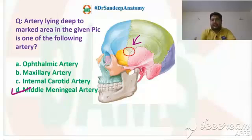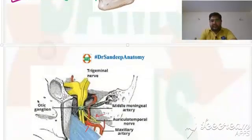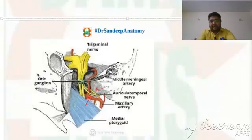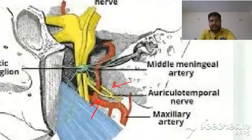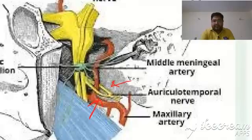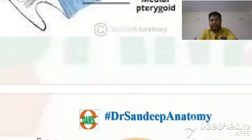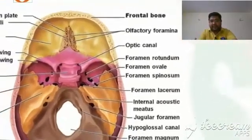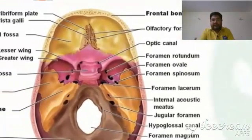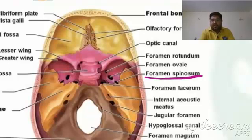Let us look at the anatomy of the middle meningeal artery and the other important points about this artery. To begin with, it is a branch of the maxillary artery. It passes between the two roots of the auriculotemporal nerve, and then it enters through the foramen spinosum. We can see here — this is the foramen spinosum — and it passes through it along with the emissary vein and the nervous spinosum.